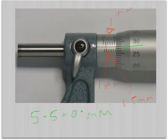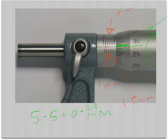This spindle goes up to 50, which is 0.5 millimeters, 0.50. And we look for where it's lining up on the main shaft there and it looks to be about 25, 26, 27, 28. So that means it's 0.28 millimeters. So we've got 5.5 plus 0.28 millimeters, so that means the actual answer is 5.78 millimeters.